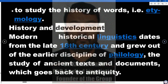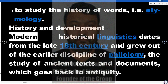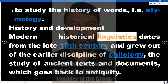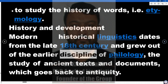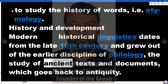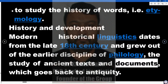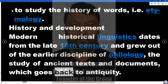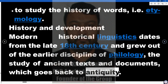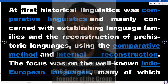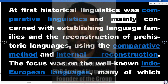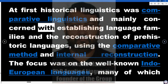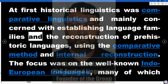History and development. Modern historical linguistics dates from the late 18th century and grew out of the earlier discipline of philology — the study of ancient texts and documents — which goes back to antiquity. At first, historical linguistics was comparative linguistics and mainly concerned with establishing language families.